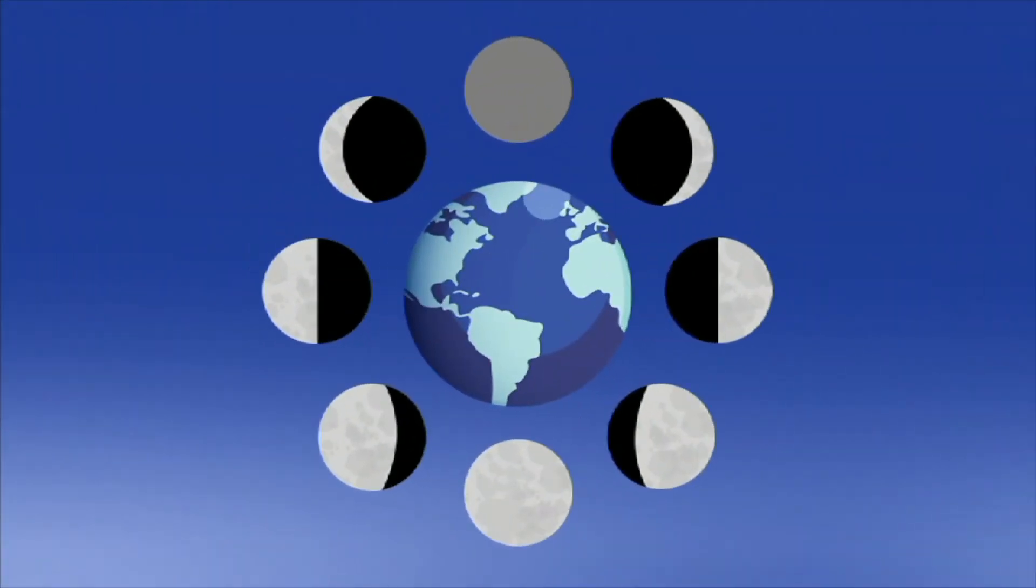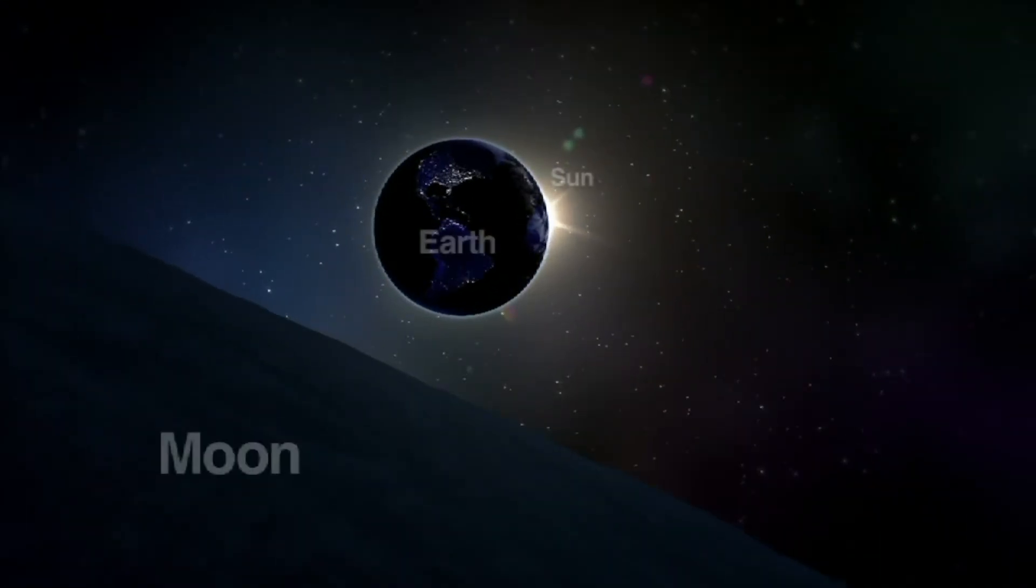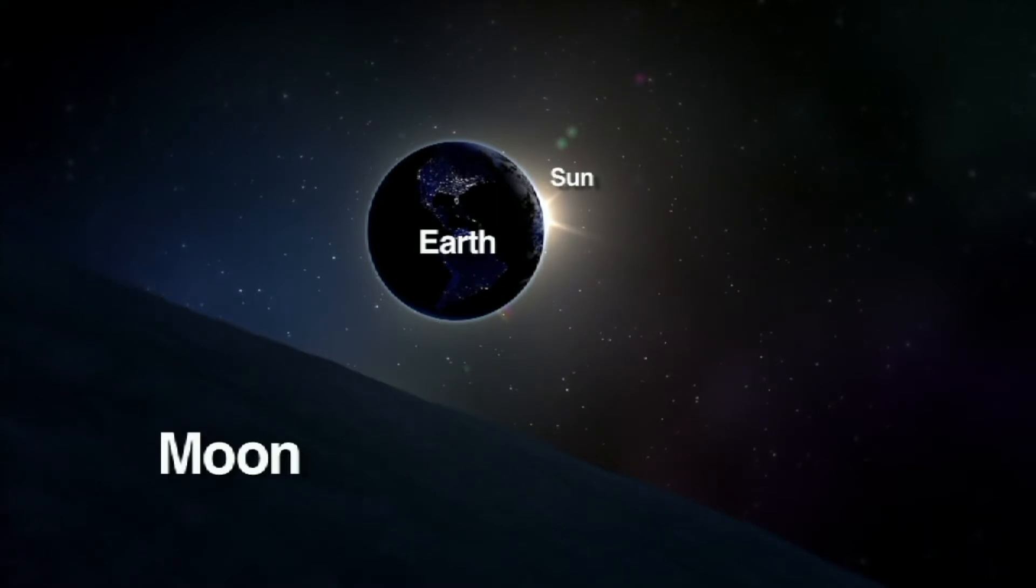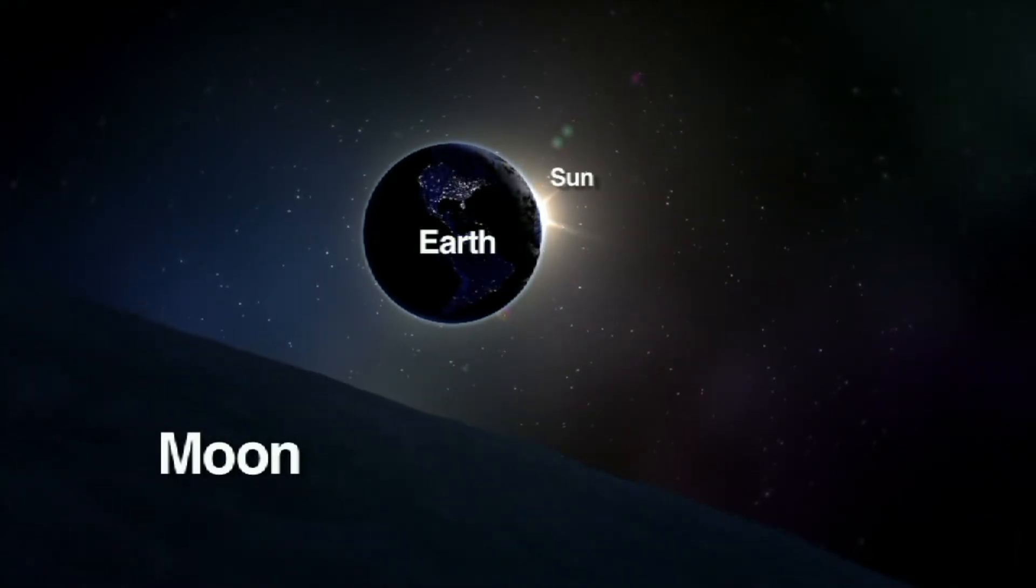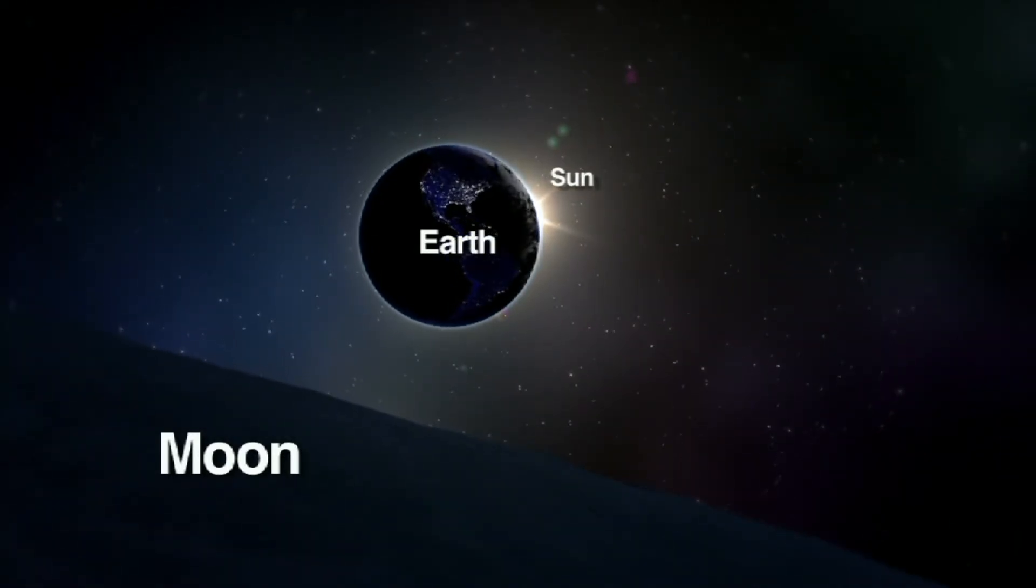The next phase is called full moon. This happens when the Earth is between the sun and the moon. We can see the whole moon.